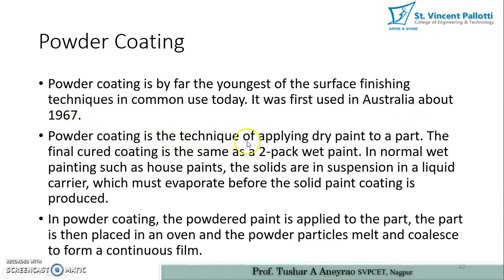Powder coating is a technique of applying dry paint to a part. The final cured coating is the same as a two-pack wet paint — meaning two layers of painting can be observed when performing the powder coating operation. In normal wet painting such as house paint, the solids are in suspension in a liquid carrier which must evaporate before the solid paint coating is produced. So basically paint is a solid state object.